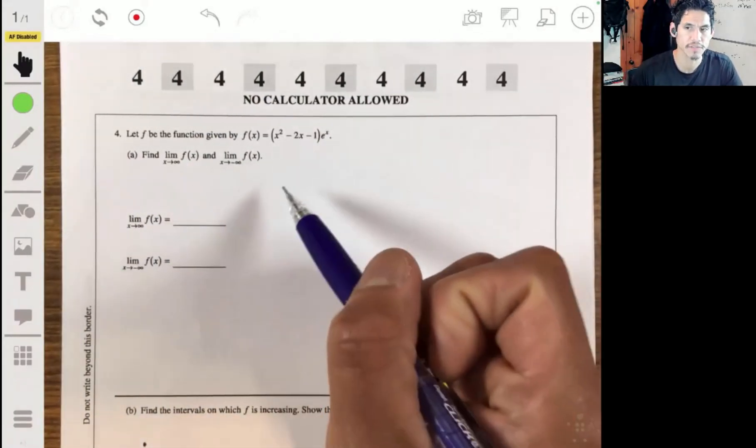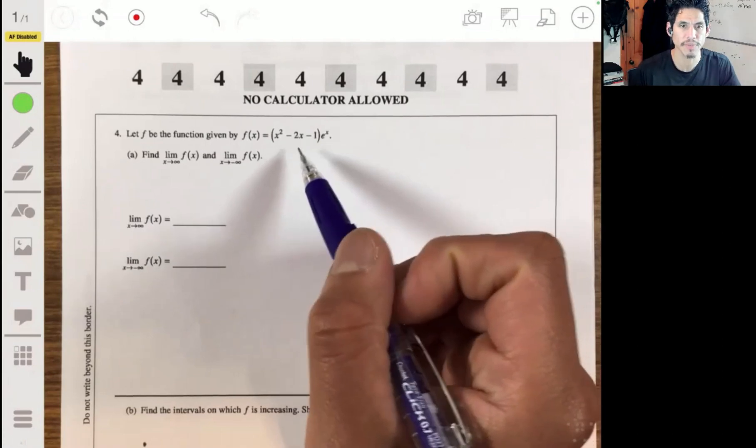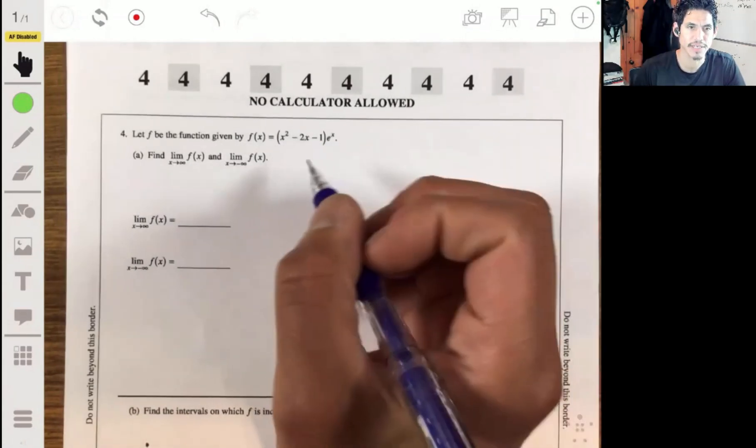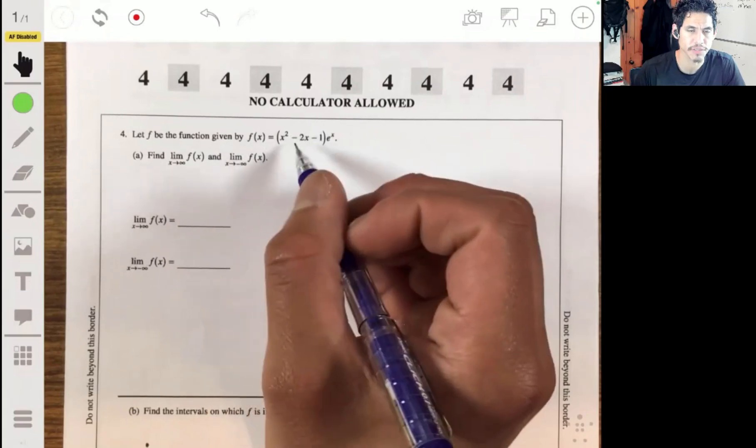All right, problem four, free response question problem four from the 2013 AP Calculus practice exam. We have let f be the function given by this equation here.